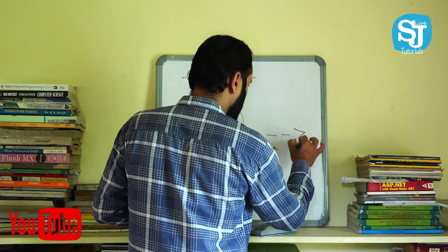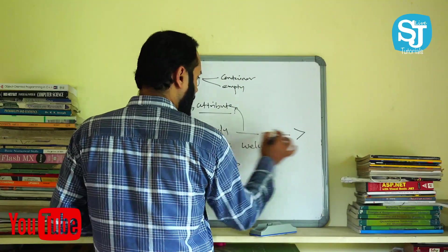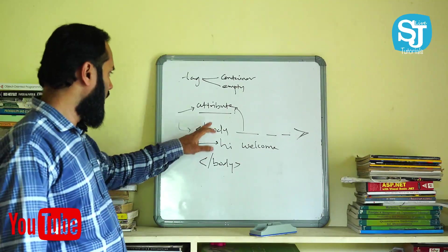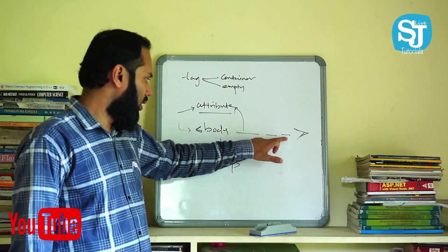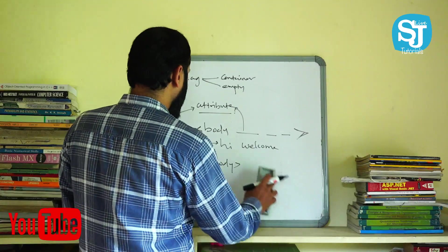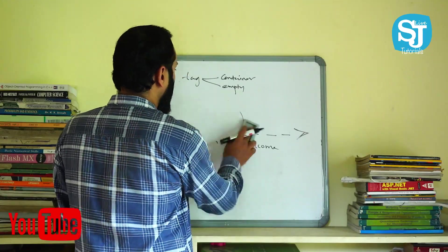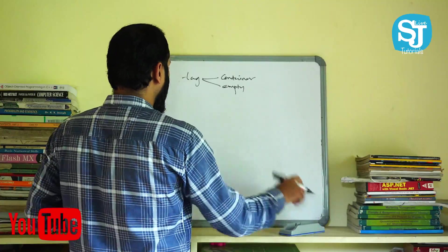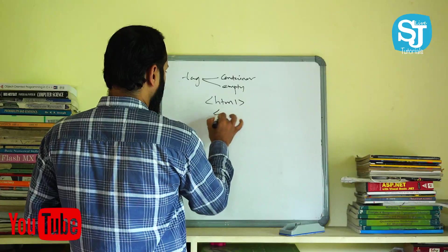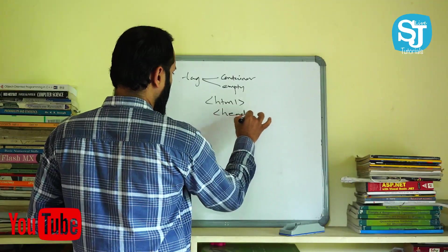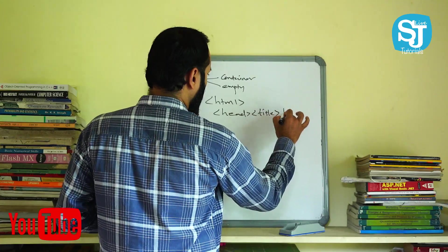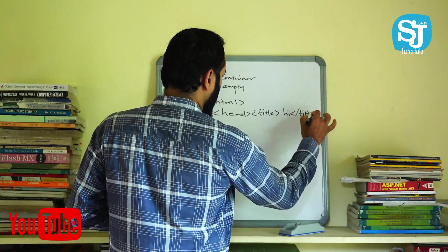It is less than or greater than. I will tell you a few things in my example. We have added attributes in the attributes. Let's take a basic example of HTML. We have a code in HTML — HTML, then head, title, title is close.